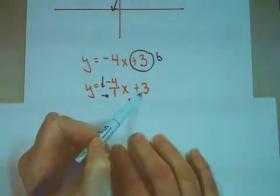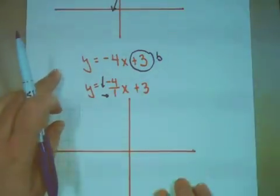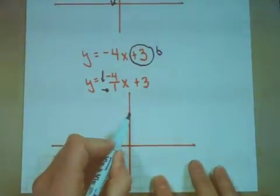So again, my b value hasn't changed. I need to start at positive 3, so I'm going to go up 1, 2, 3, put a big fat dot.